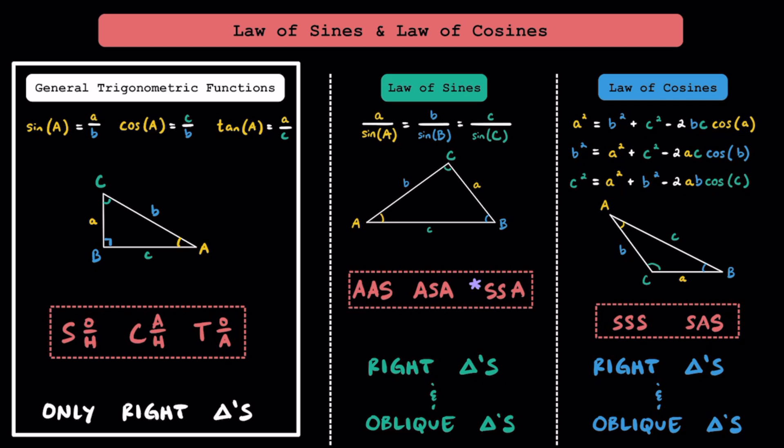If you're learning about the law of sines and cosines, that means you've already learned about your general trig functions. Using sine, cosine, tangent, and SOHCAHTOA, you've been able to solve for all three sides and all three angles of right triangles. The reason why you need to learn about the law of sines and cosines now is because SOHCAHTOA has its limitations — it only works for right triangles.